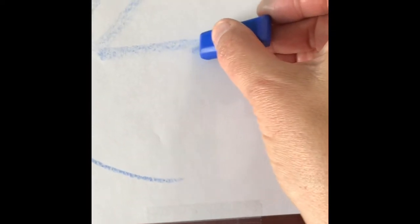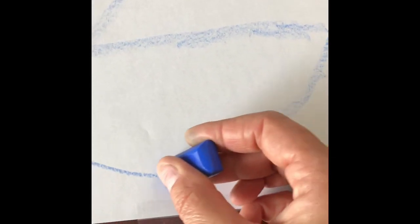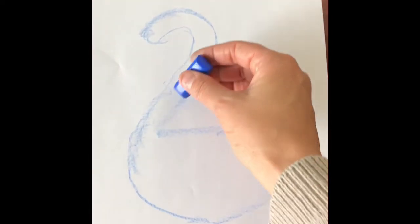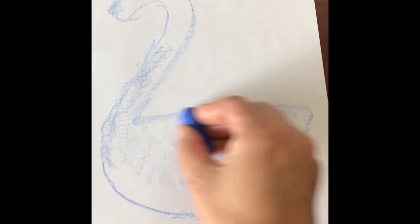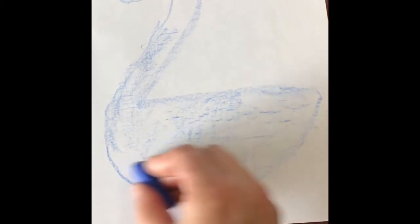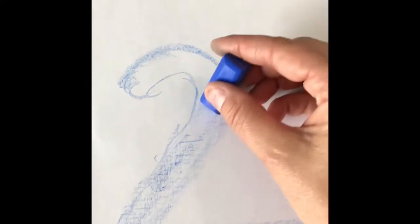And if we look where the two is, we're going to connect it down. And look at that, it's a basic swan shape. Now our swan is missing a couple of things. It's missing tail feathers.